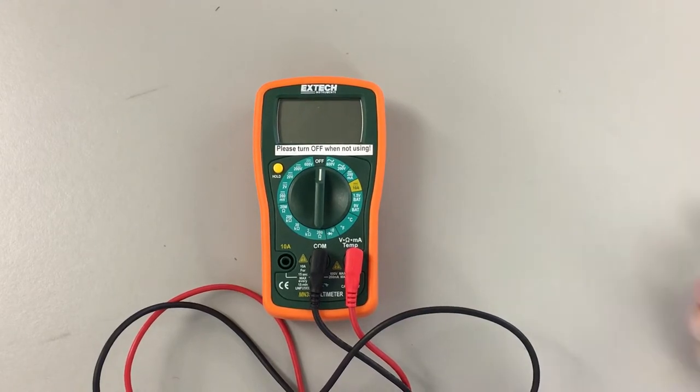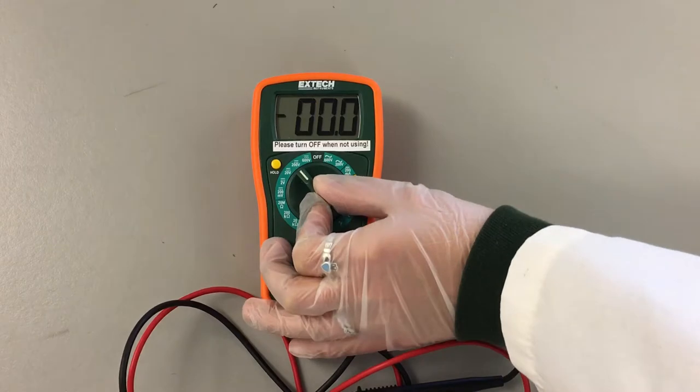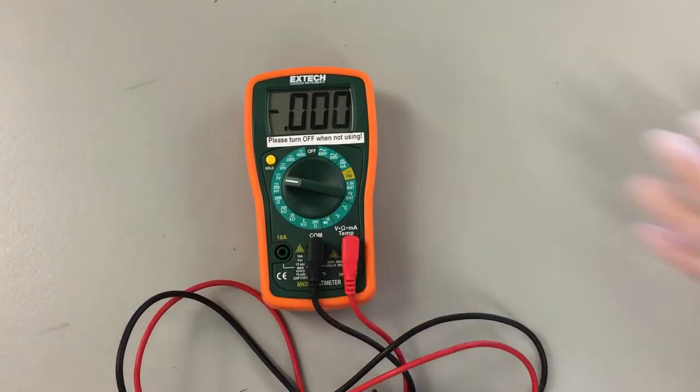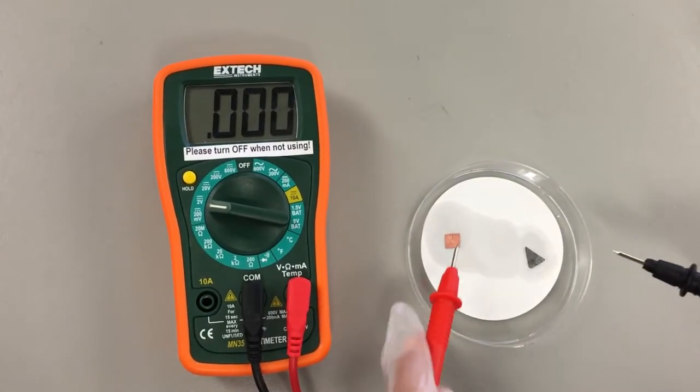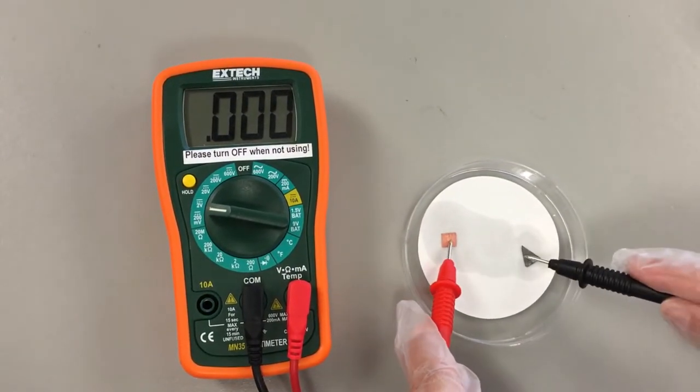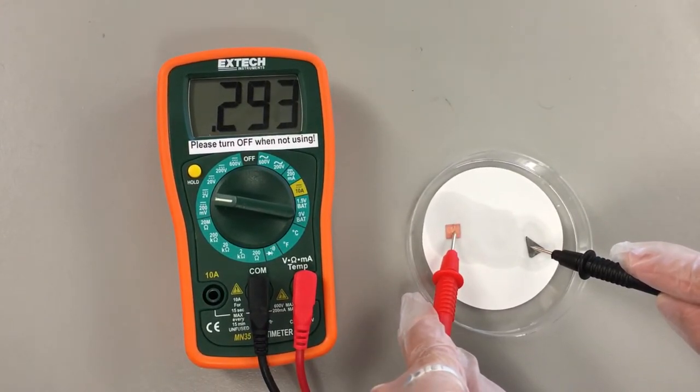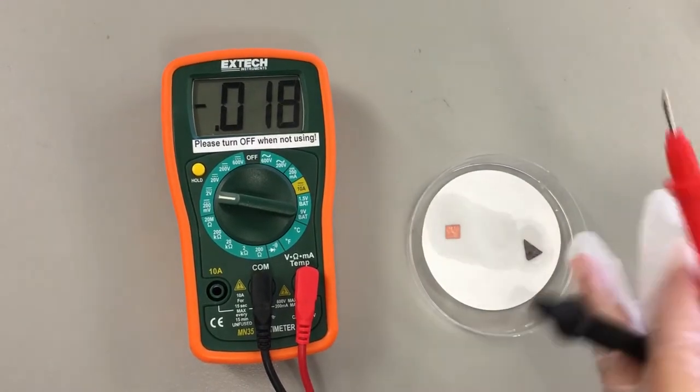First, turn on the voltmeter by turning the dial to the scale and unit you want to measure. Here we are going to use the two volt setting with direct current. Place your positive lead on the anode and your negative lead on your cathode. If your voltmeter is giving you a negative value, switch the positions of your positive and negative leads.